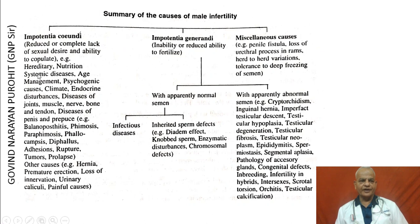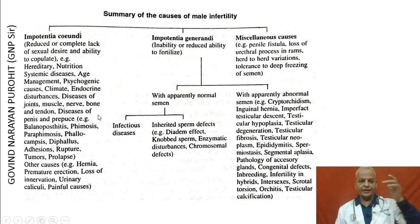Impotentia coendi includes causes such as hereditary, nutrition, systemic diseases, age management, endocrine disturbances, diseases of joints, muscle, nerve, bone and tendon, and diseases of the penis and prepuce. Other causes include hernia, premature ejaculation, loss of innervation, urinary calculi, etc.